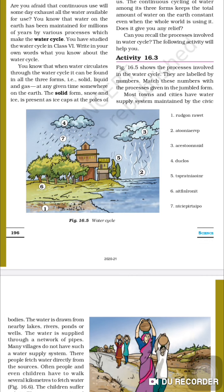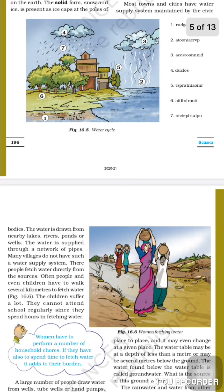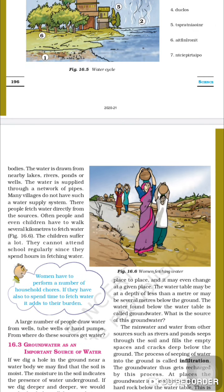Most cities have a water supply system maintained by civic bodies. The water is drawn from lakes, rivers, ponds, or wells and supplied through a network of pipes.